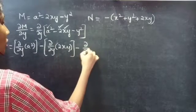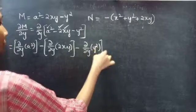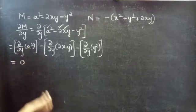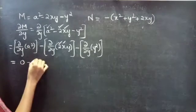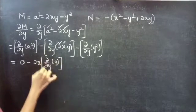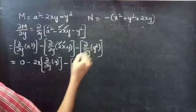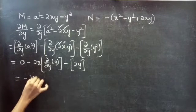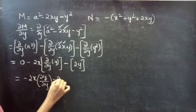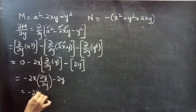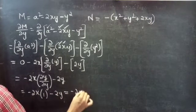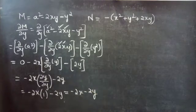This equals to partial derivative of first term minus partial derivative of second term minus partial derivative of third term. Partial derivative of x square with respect to y is 0, minus constant 2x into partial derivative of y with respect to y, minus partial derivative of y square with respect to y is 2y. Since partial derivative of y with respect to y is 1, this equals to minus 2x minus 2y.